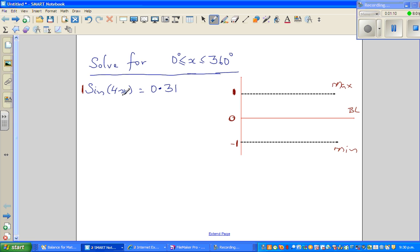And this 4 tells me that within 360 degrees, the sine curve will repeat itself 4 times. So here the period of this sine curve is 90 degrees.